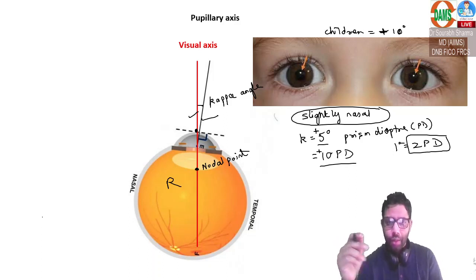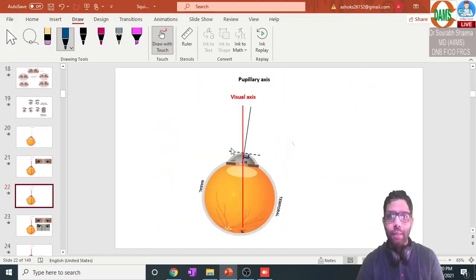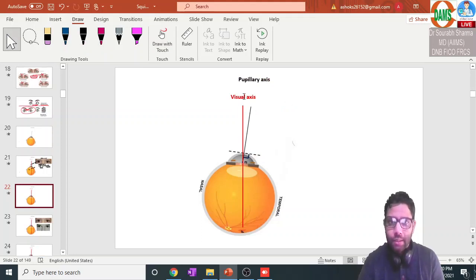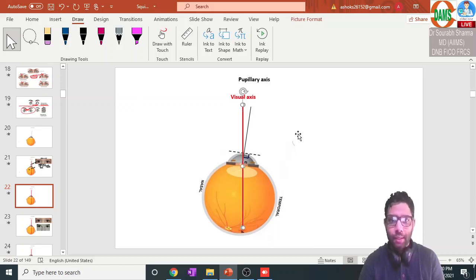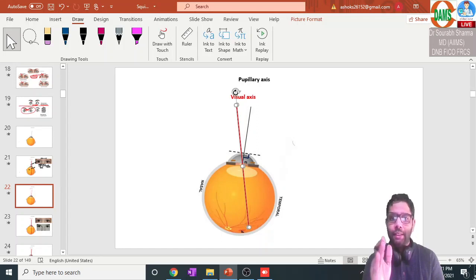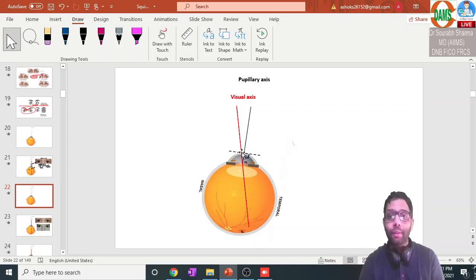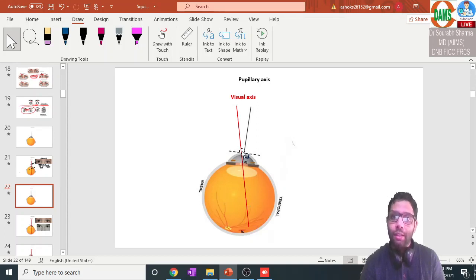Let us go one step further. Looking at the visual axis and the pupillary axis again — if the fovea shifts a little bit more temporal, there is a temporal dragging of the fovea. If the fovea goes temporal, the reflex on the cornea will be seen slightly more nasal, meaning there is an increase in the kappa angle.